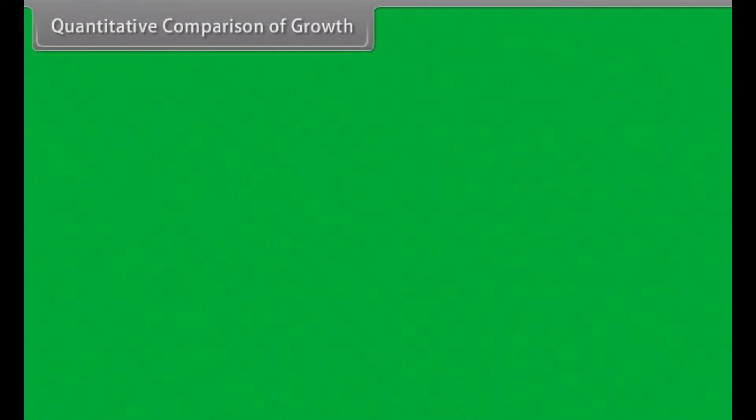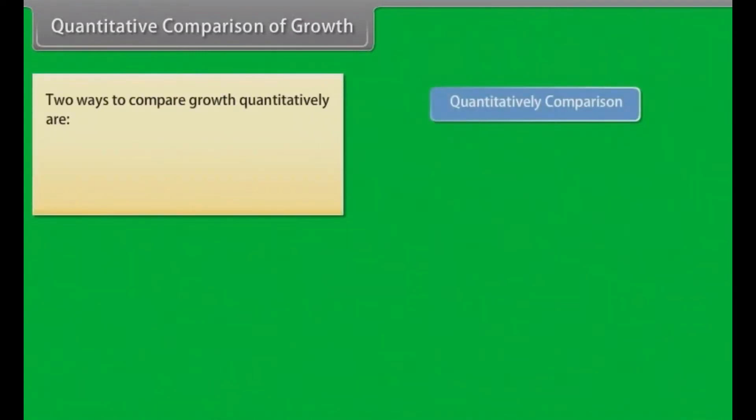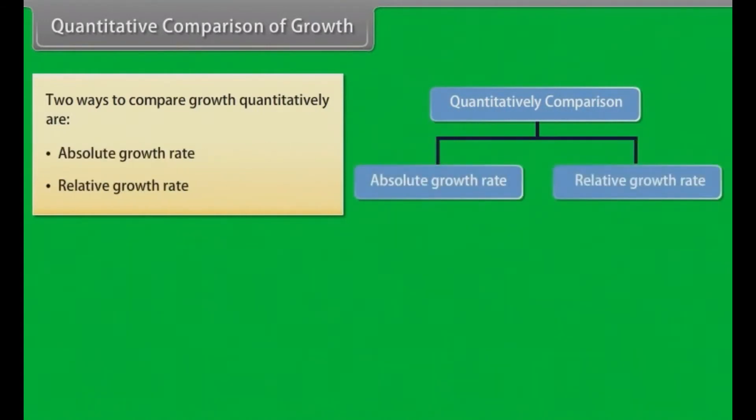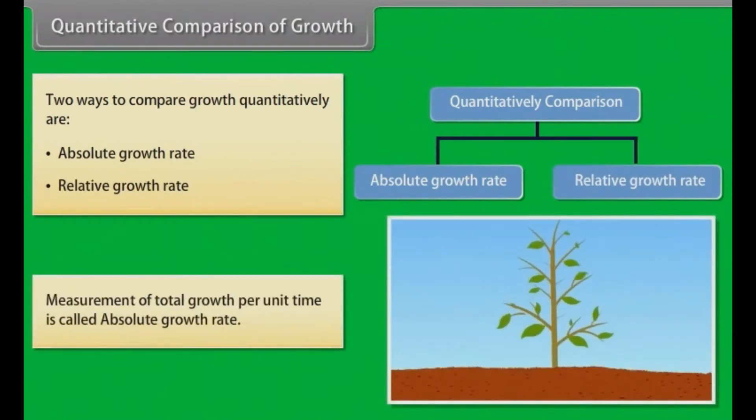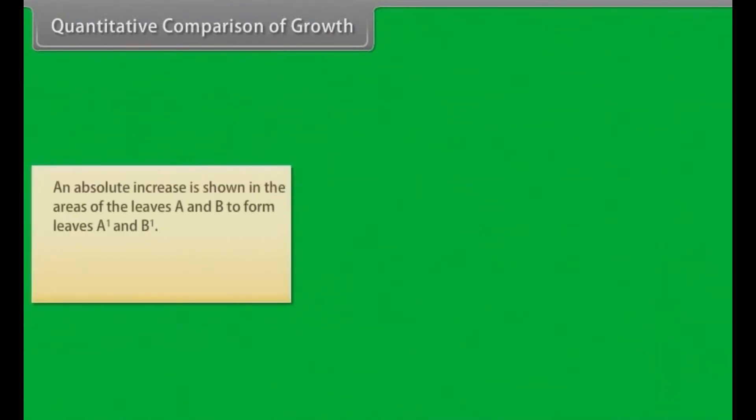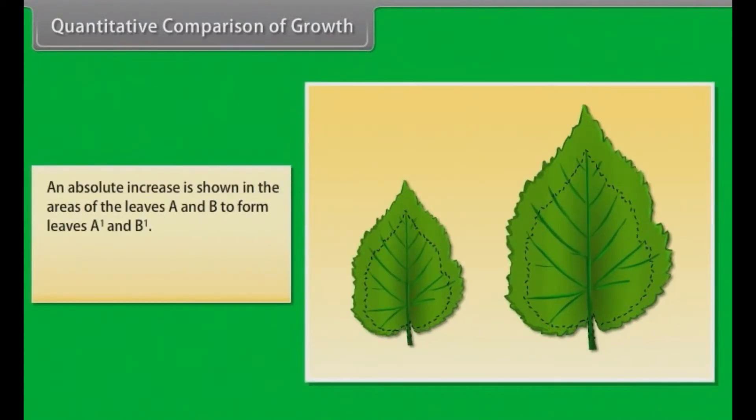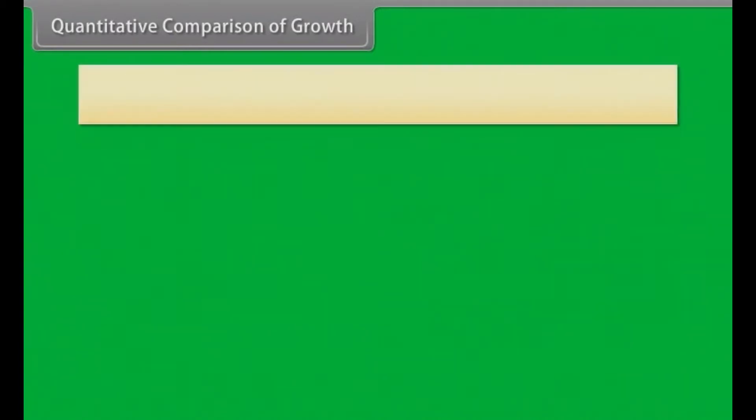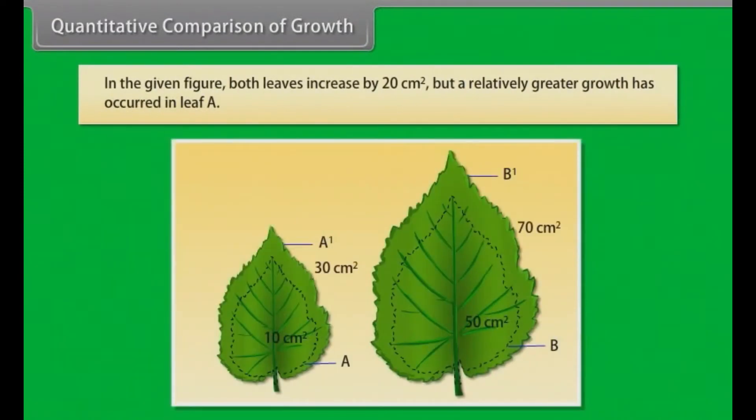Quantitative comparison of growth. Two ways to compare growth quantitatively are absolute growth rate and relative growth rate. Measurement of total growth per unit time is called absolute growth rate. An absolute increase is shown in the areas of the leaves A and B to form leaves A1 and B1. Growth of given system per unit time is called relative growth rate. In the given figure, both leaves increase by 20 cm2, but a relatively greater growth has occurred in leaf A.